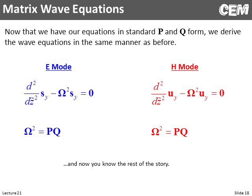We let the matrix omega squared equal P times Q and have our matrix wave equation again. This looks exactly like what we saw for the transfer matrix method and for three-dimensional RCWA, and it's handled the same way. All the equations for scattering matrices are the same. So once we're in this P, Q form, the rest of the method looks the same.